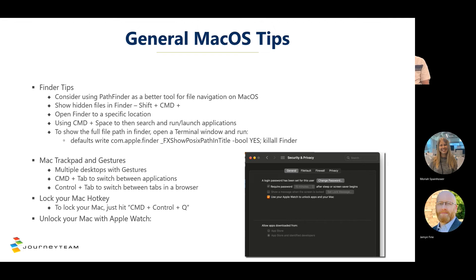Command+Space is one of my most commonly used shortcuts — it brings up Spotlight search so you can search for local files and applications. When I want to launch an application, I hit Command+Space, type 'word', hit enter, and Word launches. To show the full file path in Finder, open a terminal and run the command listed — you'll get the full file path of where you're looking in Finder.